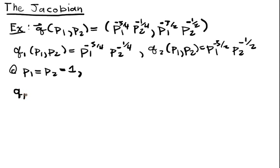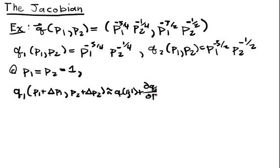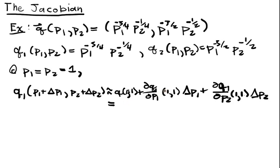So we're going to set Q1 of P1 plus delta P1 and P2 plus delta P2. That's going to be approximately Q1 plus DQ1 DP1 of 1,1 delta P1 plus partial of Q1 with respect to P2, the second entry evaluated at 1,1 delta P2. When we plug in numbers and calculate these things we're going to get 1 minus three fourths delta P1 minus one fourth delta P2.